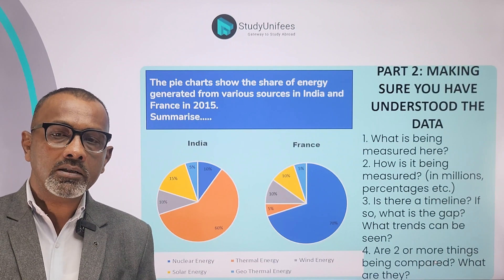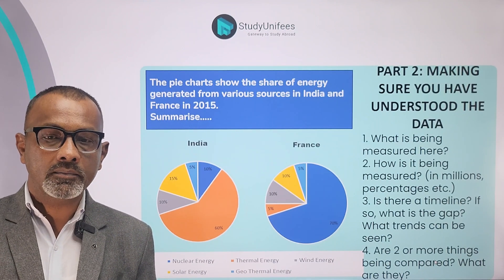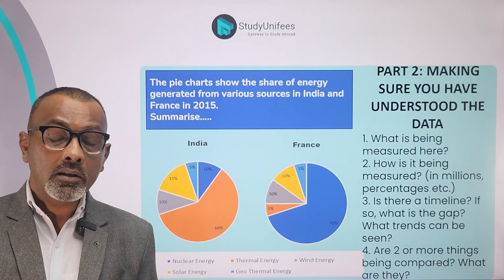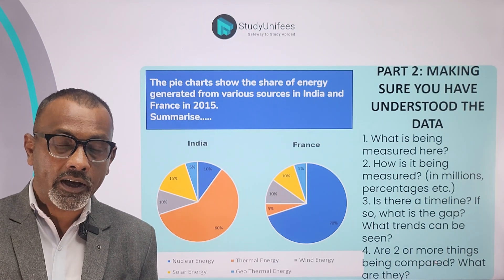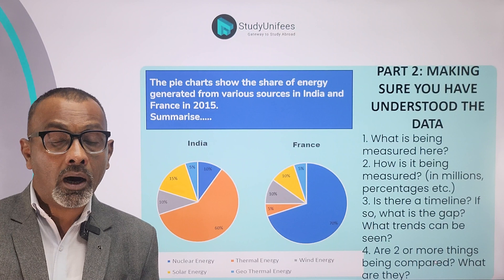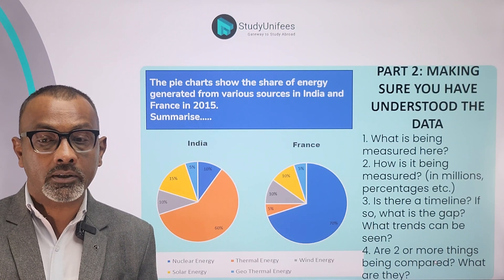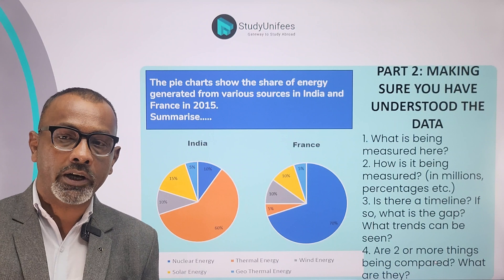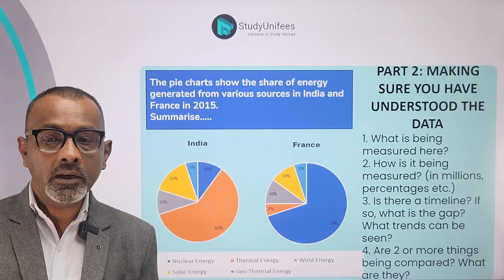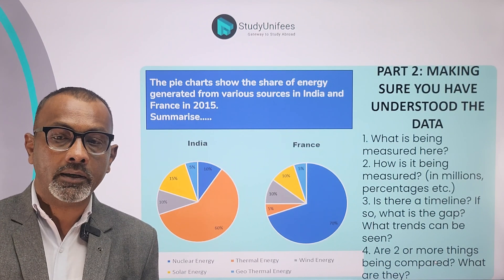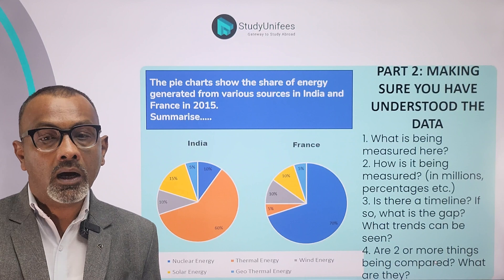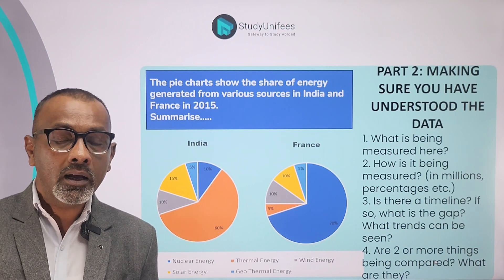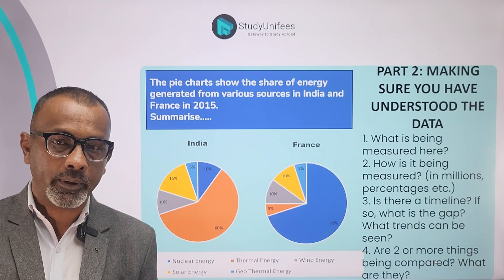Now let's look at analysis part 2 with pie charts. What is being measured here? The shares of various sources of energy that contribute to power consumption in two countries. How is it being measured? In percentile shares. Is there a timeline? No, there is no timeline. Are two or more things being compared? Yes — two countries are being compared and five energy sources are being compared.